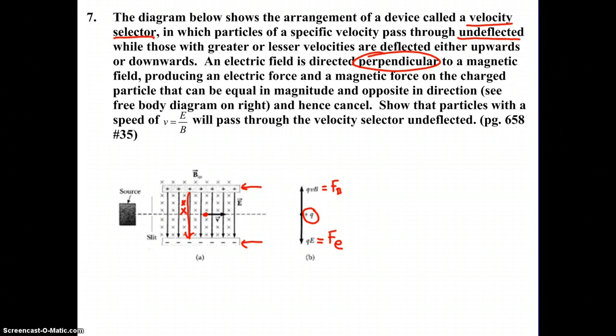Well, at just the right velocity, and this is the purpose of the velocity selector, the FB up is equal to, and cancels out, the force due to the electric field downward. So that charged particle will pass through the velocity selector undeflected, meaning its path won't be curved upward, or its path won't be curved downward due to the electric field being stronger or weaker, depending on the velocity.